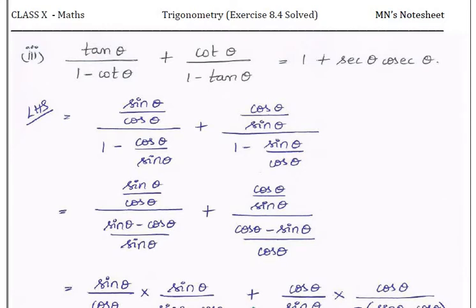Trigonometry exercise 8.4, 5th question, 3rd subdivision. You have to prove that LHS is equal to RHS. The LHS is in terms of tan and cot — two separate terms separated by a plus sign. The RHS has more complicated terms: secant and cosecant.